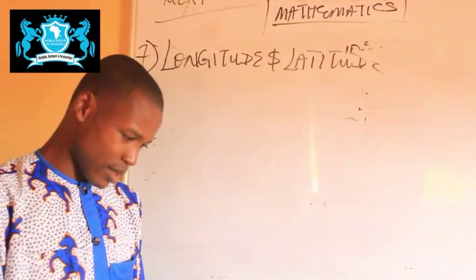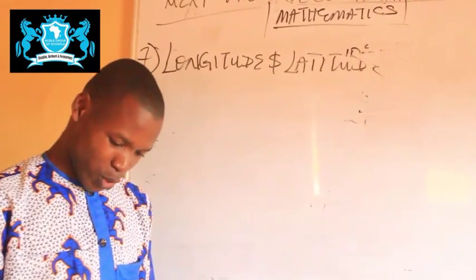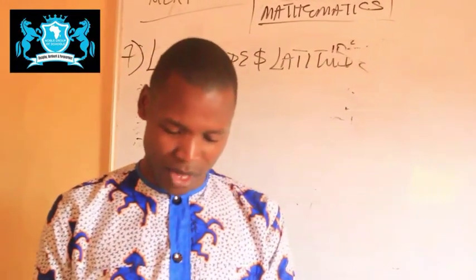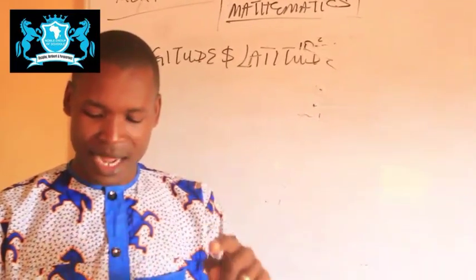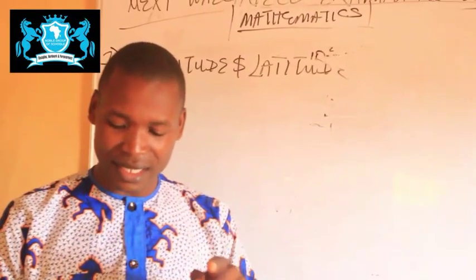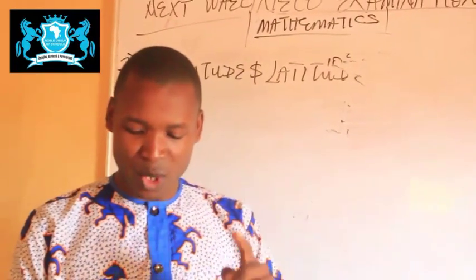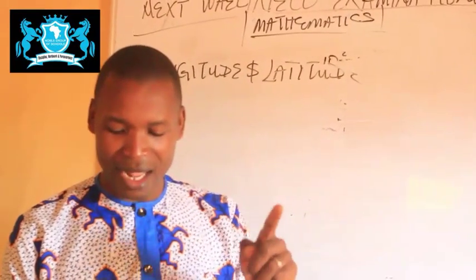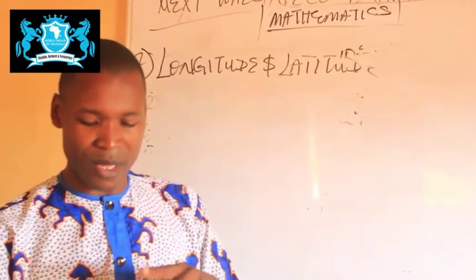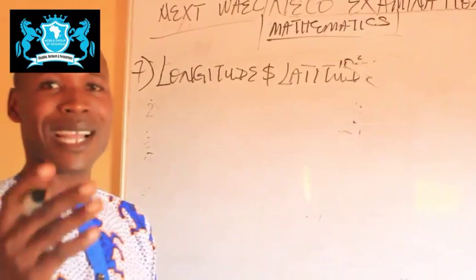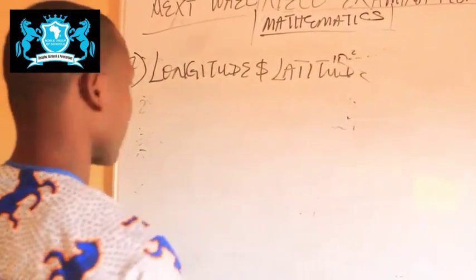Let's look at an example. WAEC 2005 question 8 — this aspect comes out every year. The question says: 'A plane flies due east from A at latitude 53 degrees north to a point B at latitude 53 degrees north, 85 degrees east, at an average speed of 400 km/h. The plane then flies south from B to a point C, 200 km away. Calculate, to the nearest whole number: A) the distance between A and B, B) the time the plane takes to reach point B, C) the latitude of C. Take the radius of the Earth as 6400 km and π as 22/7.' This question comes out every year, so look at it and master it.